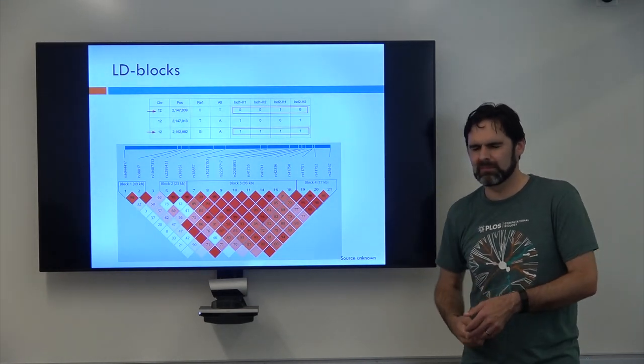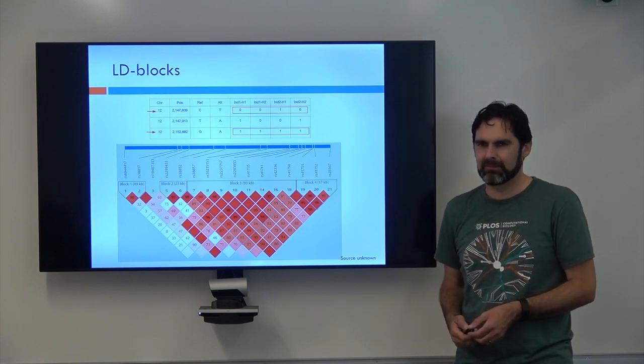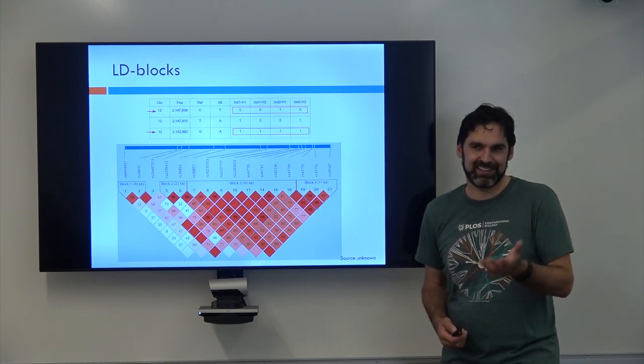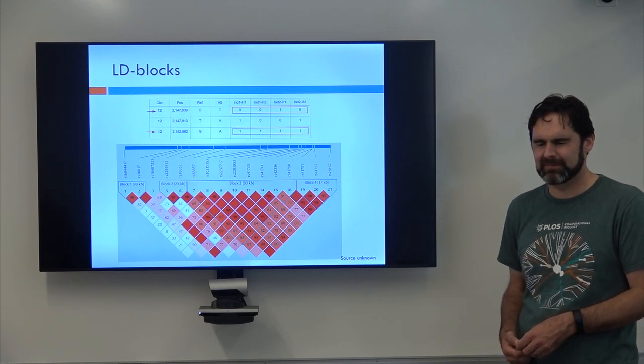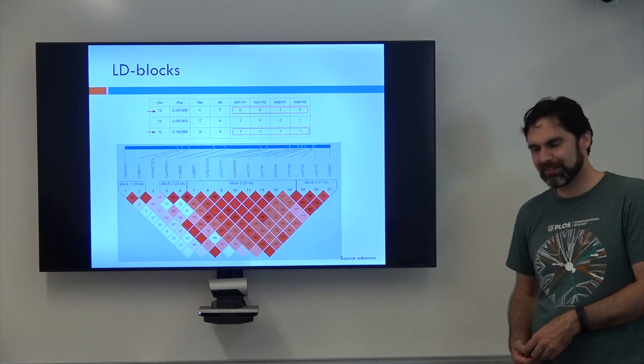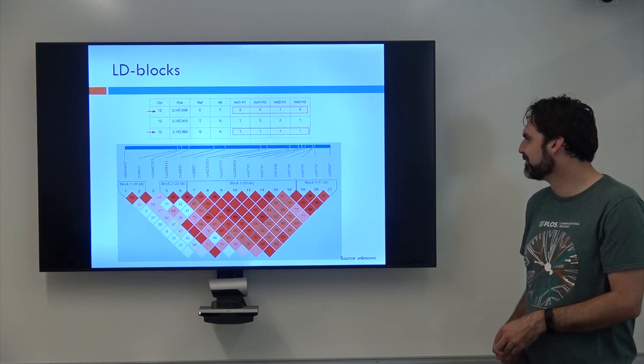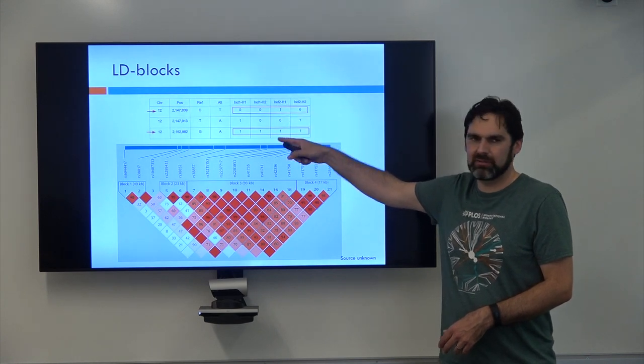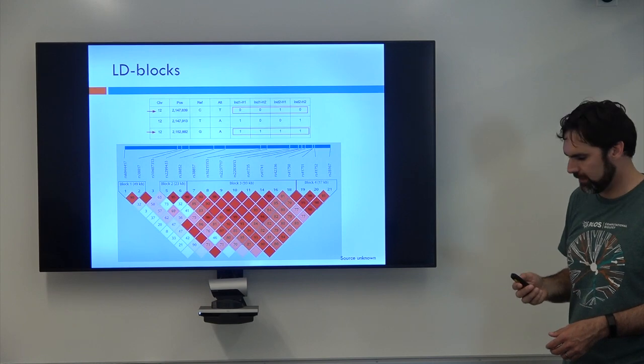They're usually called topologically associating domains or TADs and the way that you find them is with a different type of data, not just genotyping. Real biology, because it has to do with where the chromosomes are kept within the nucleus of cells. Unrelated but interesting. I will store that in my back pocket for when I need to look smart. So you'll see this a lot and essentially all these scores are is the correlation between these SNP values.